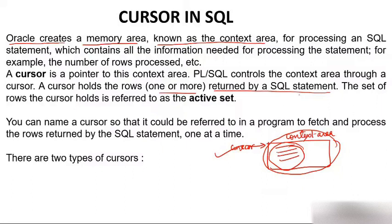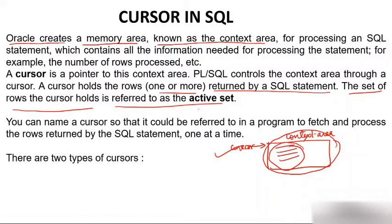Generally, a SQL statement returns rows. In case of deletion, it has deleted 5 rows. In case of updation, it has updated 5 rows. In case of insertion, it has inserted 1 row. All these are handled by cursor. The set of rows the cursor holds is referred to as the active set.